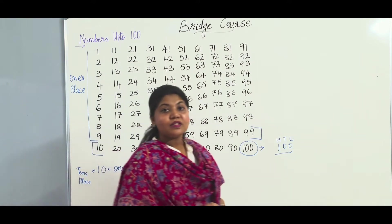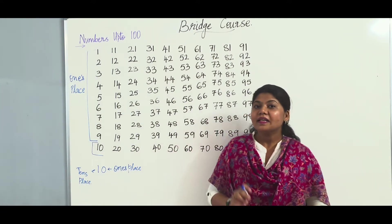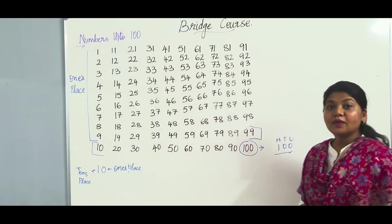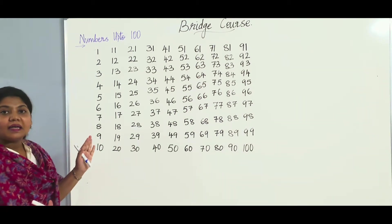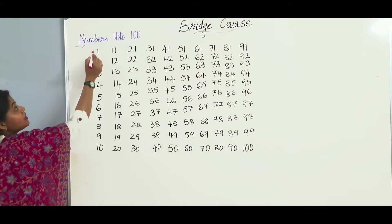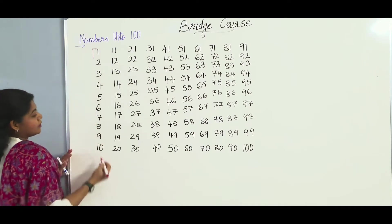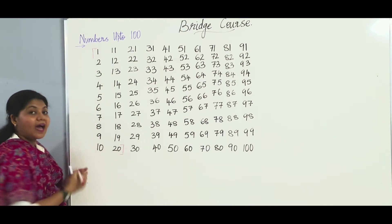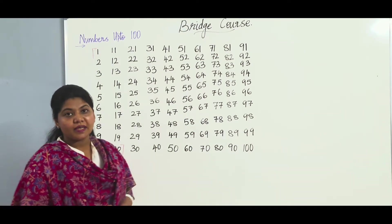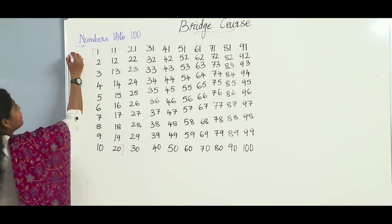These numbers also have their number names. So let us learn about number names. Numbers from 1 to 20 have their individual names. Let us see what those are.